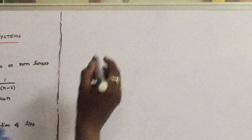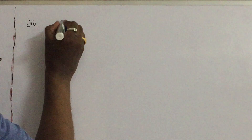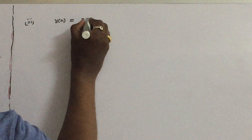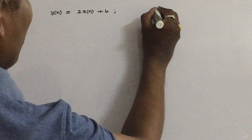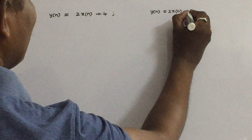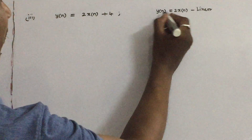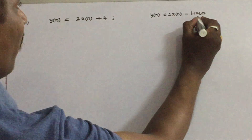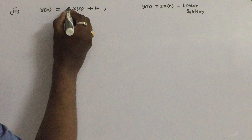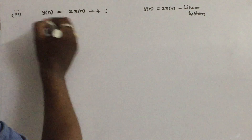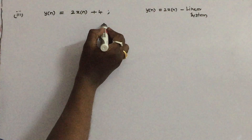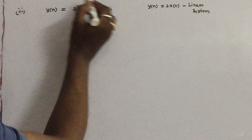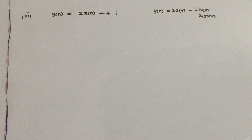Let us see the third example. y(n) is equal to 2·x(n) + 4. Remember: if y(n) were given as 2·x(n) alone, it is a linear system since there is a linear relation between y(n) and x(n). But if it is given as a·x(n) + b with a constant added, it becomes a non-linear system — even though y(n) appears proportional to x(n), the constant makes it non-linear.